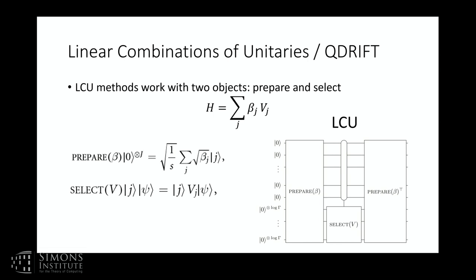The first approach I'm going to discuss is the linear combinations approach. Something interesting is that Q-Drift — Earl Campbell's randomized compiler for evolution — should actually be thought of not like a Trotter formula as he suggested, but rather as a linear combinations of unitaries method.